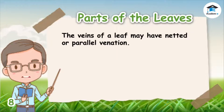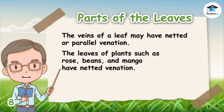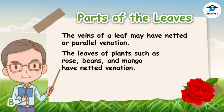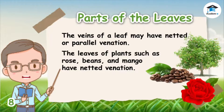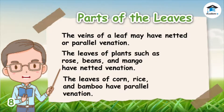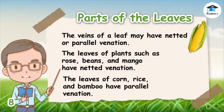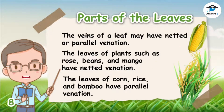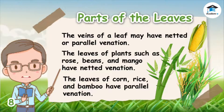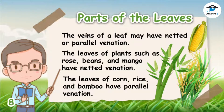The veins of a leaf may have netted or parallel venation. The leaves of plants such as rose, beans, and mango have netted venation. The leaves of corn, rice, and bamboo have parallel venation.